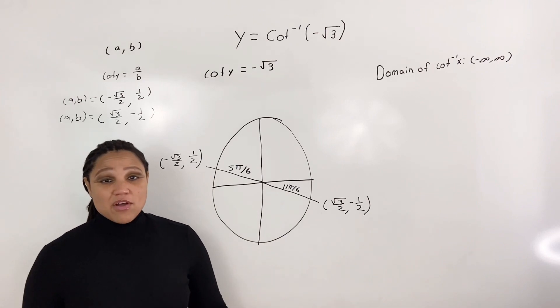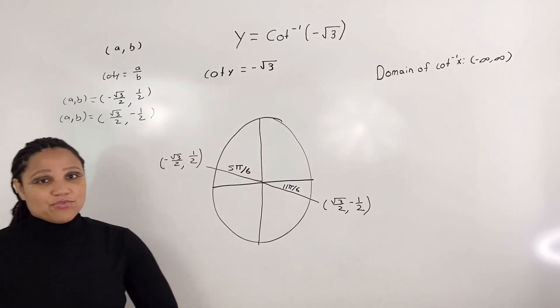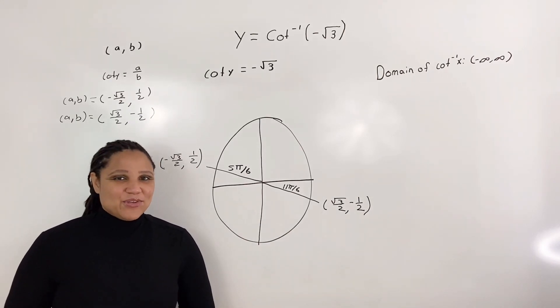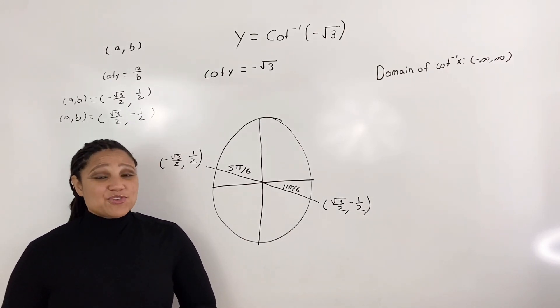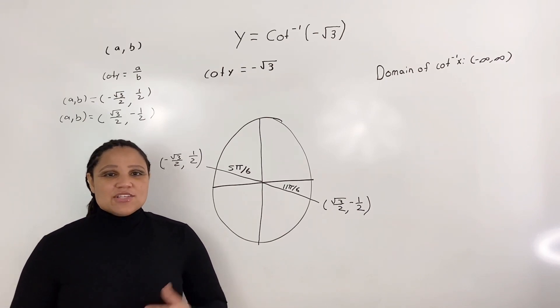Now, we're asking ourselves, where on the unit circle does cotangent of y equal negative root 3? Now, we can't just choose any value for y. We have to consider the range of inverse cotangent.